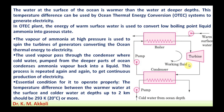The liquid ammonia is supplied again by pump to the boiler, and this cycle continues for continuous generation of electricity. The used warm surface water as well as the cold deep water are pumped back to the sea. The required temperature difference for operation of this system is around 20 to 25 degrees Celsius.